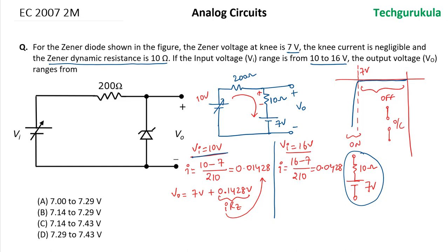So the output voltage will be equal to 7 volts plus Rz times the current.